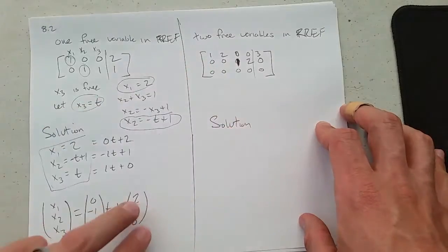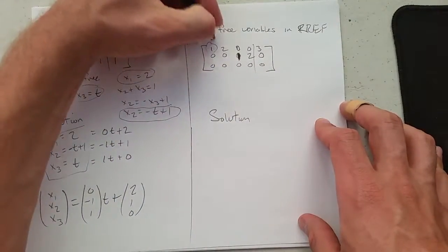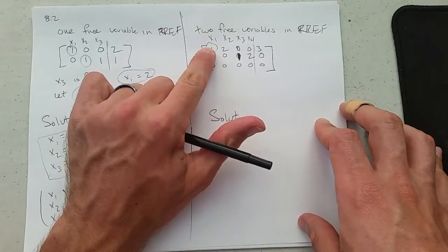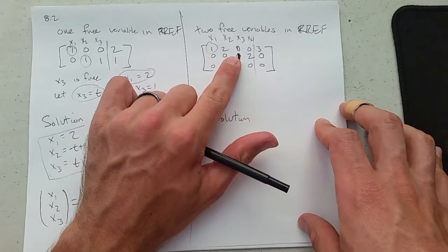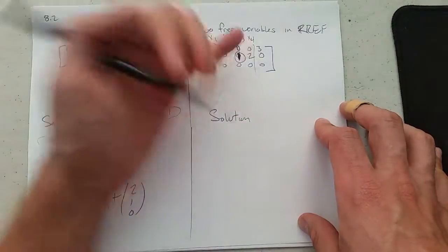Now two free variables. What does that look like? I can see x1, x2, x3, x4. x1 gets locked down here. x3 is the next one locked down. So which are free, x2 and x4.